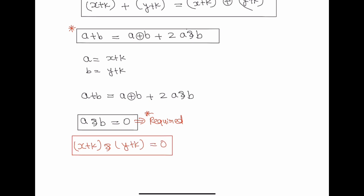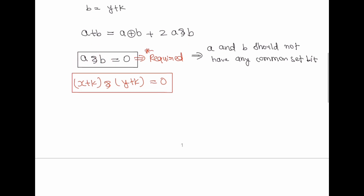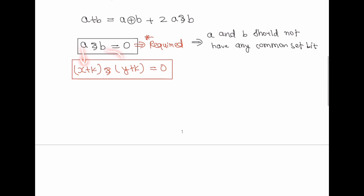We come to the conclusion that a AND b should equal zero, meaning x plus k AND y plus k must be zero. We won't use a loop to find k — looping over every possible value might give time limit exceeded. The AND of two numbers is zero only when they don't have a common set bit.